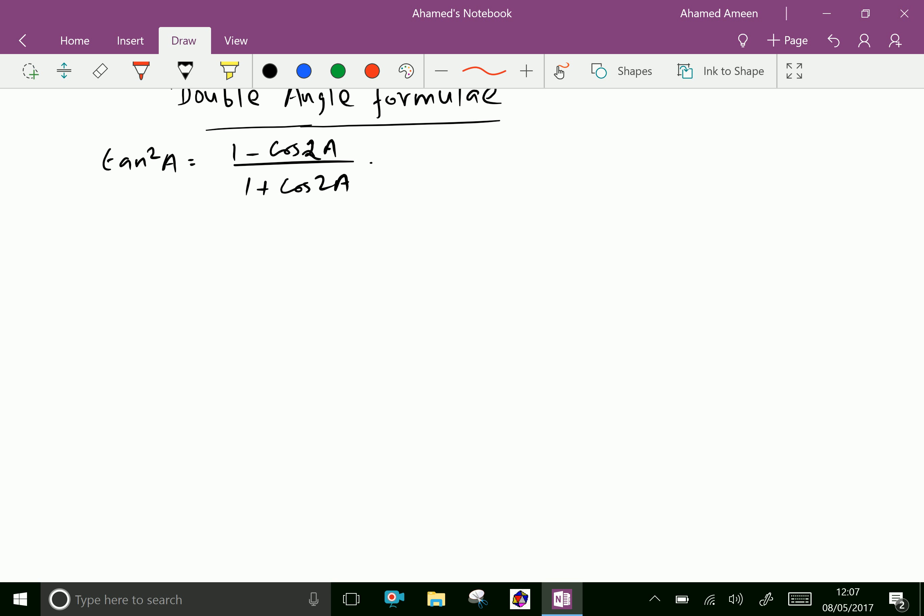We know that cos 2A equals 1 minus 2 sin squared A.